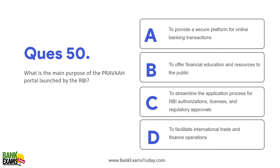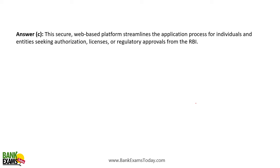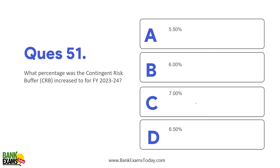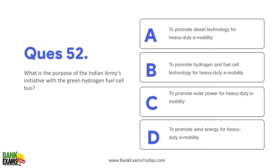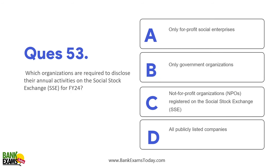What is the purpose of the Pravaah app launched by the RBI? To streamline the application process for RBI authorization, licenses, and regulatory approvals for individuals and companies — you can install this app to get your approvals. What percentage was the Contingent Risk Buffer increased to for financial year 2023–24? It is now 6.5%. What is the purpose of the Indian Army's initiative with the green hydrogen fuel cell bus? To promote hydrogen and fuel cell technology for heavy-duty e-mobility. Which organizations are required to disclose their annual activities on social stock exchanges? Non-profit organizations registered on social stock exchanges must submit their annual activities.